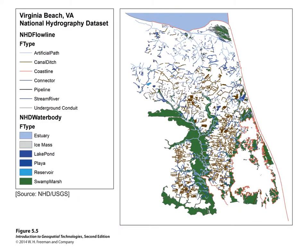Here is another map: the Virginia Beach, Virginia national hydrography dataset, which shows various line features representing rivers and streams, along with areas indicating specific land covers or water body types like estuaries, lakes, ponds, and playa. A playa — which is the bonus question on the quiz next week — is basically a prairie pothole: a depression in an otherwise flat surface that fills with water when it rains.